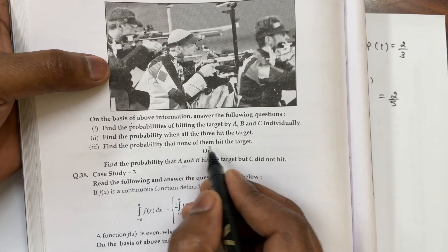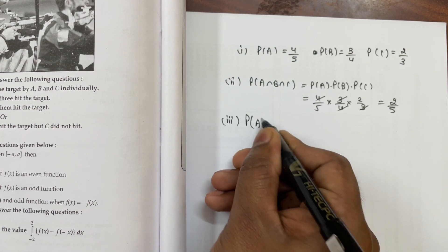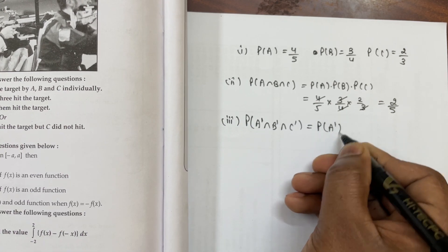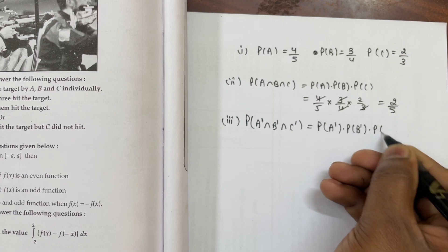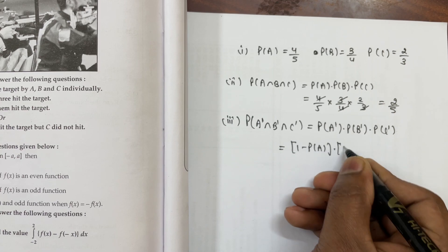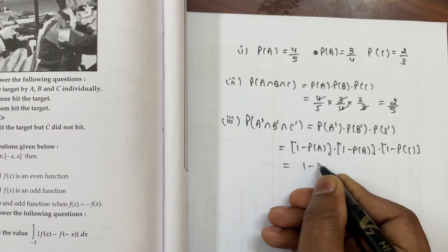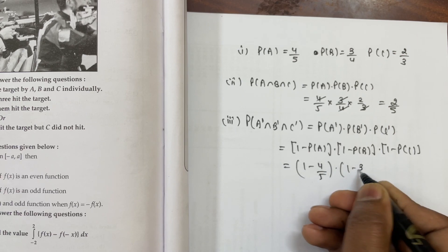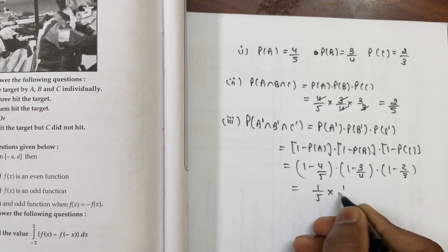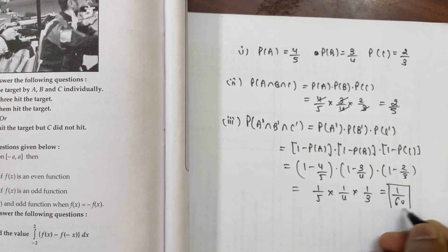Third part: Find the probability that none of them hit the target. This means no hit, so we use the complements: probability A dash into probability B dash into probability C dash. This equals 1 minus probability A, into 1 minus probability B, into 1 minus probability C. That is 1 minus 4 by 5, into 1 minus 3 by 4, into 1 minus 2 by 3, which gives 1 by 5 into 1 by 4 into 1 by 3, equal to 1 by 60.